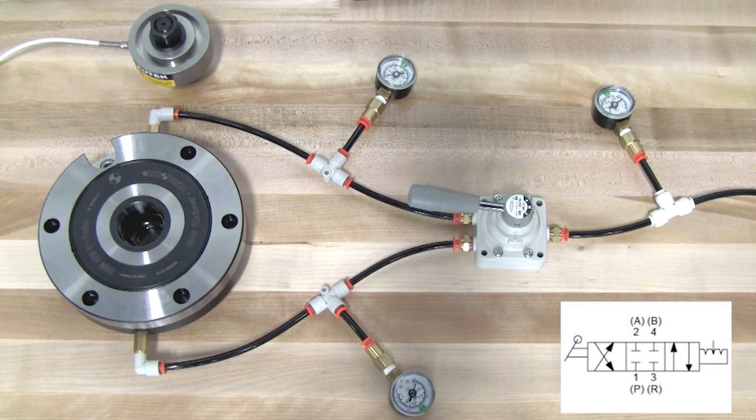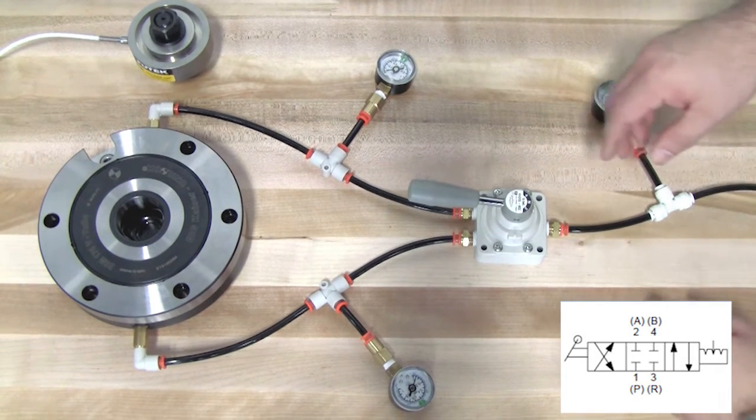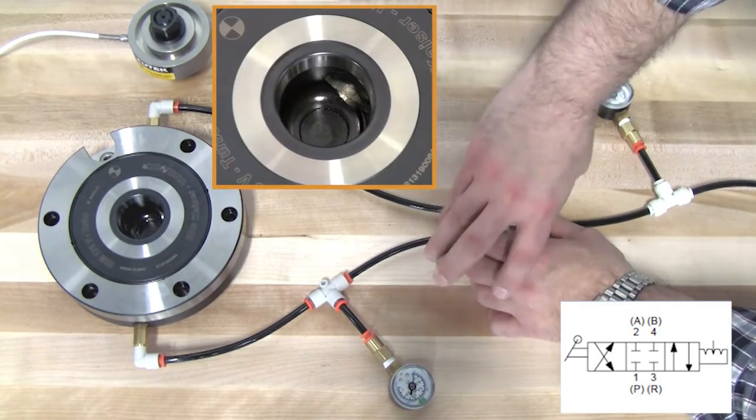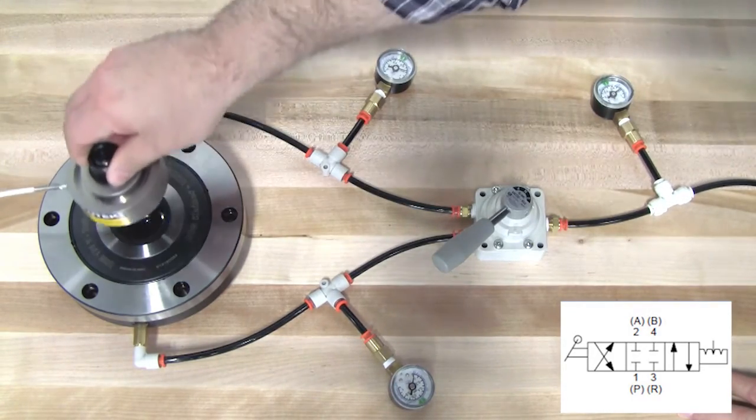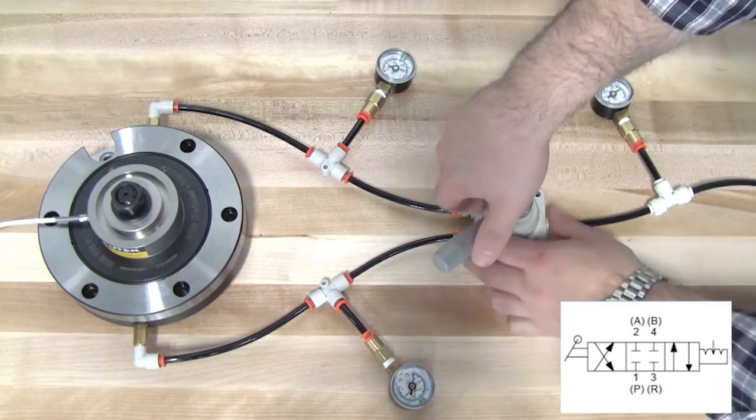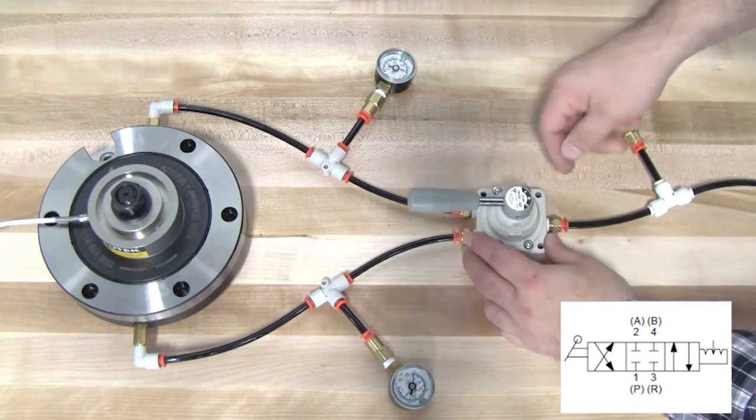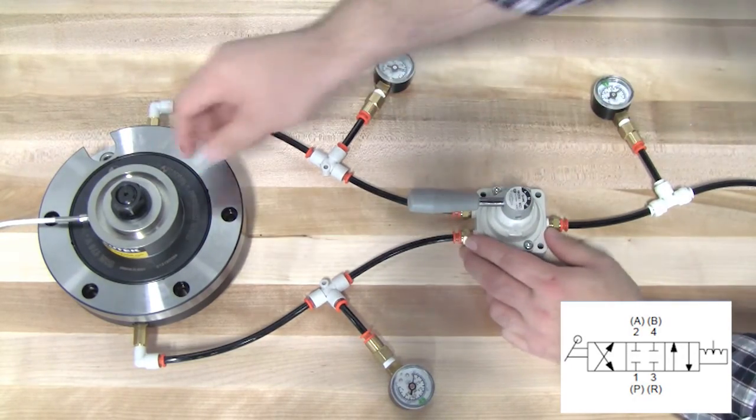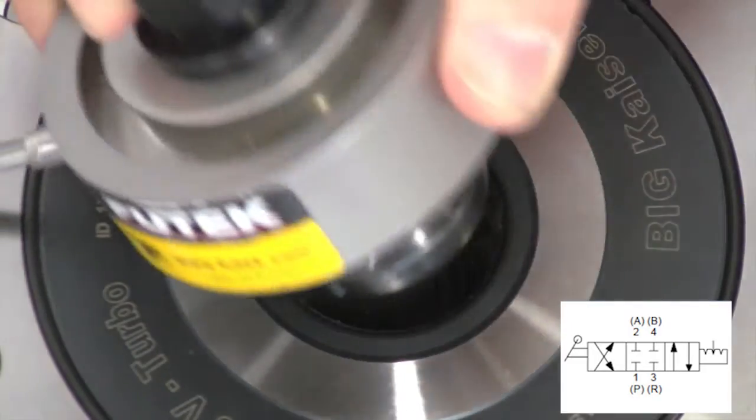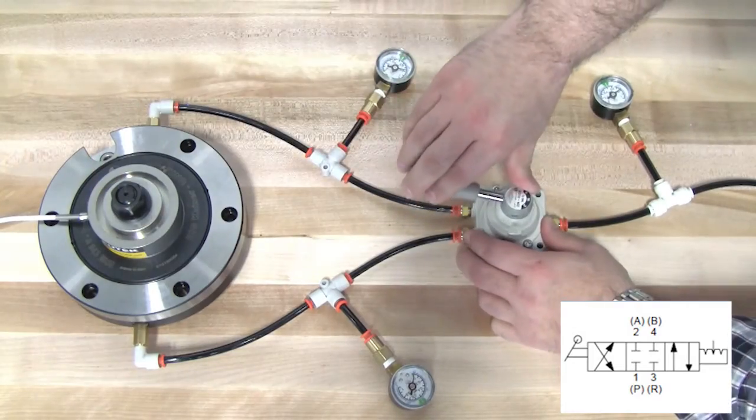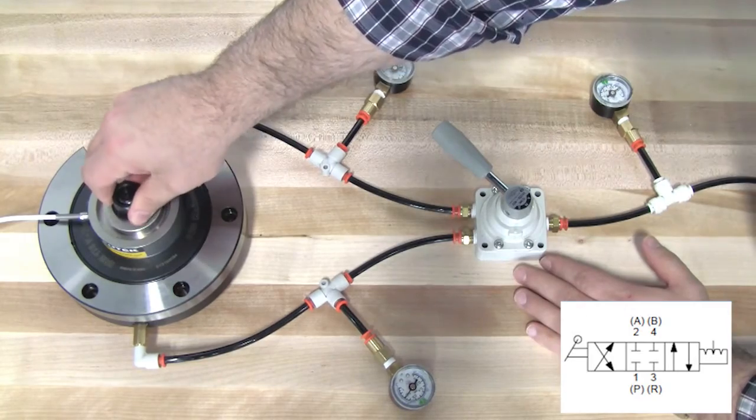Scenario 3: Three-Way Valve with a Closed Center. The second type of three-way valve is very similar to the first. It also has one input port, two output ports, and a vent port. However, its central position is called a Closed Center position.